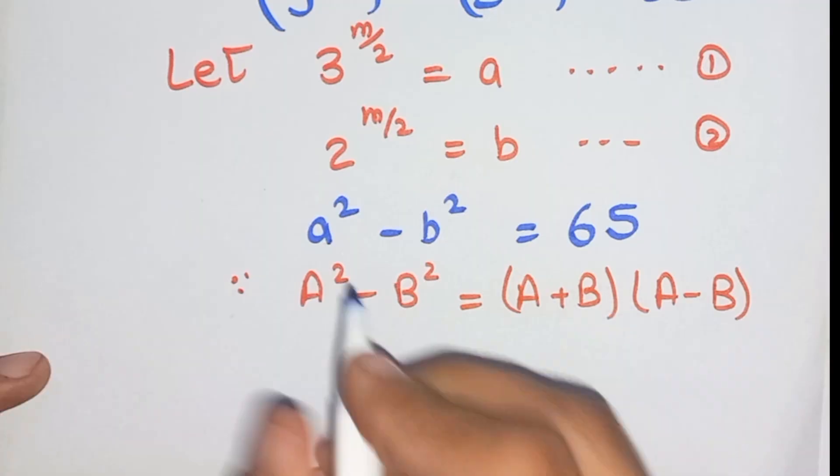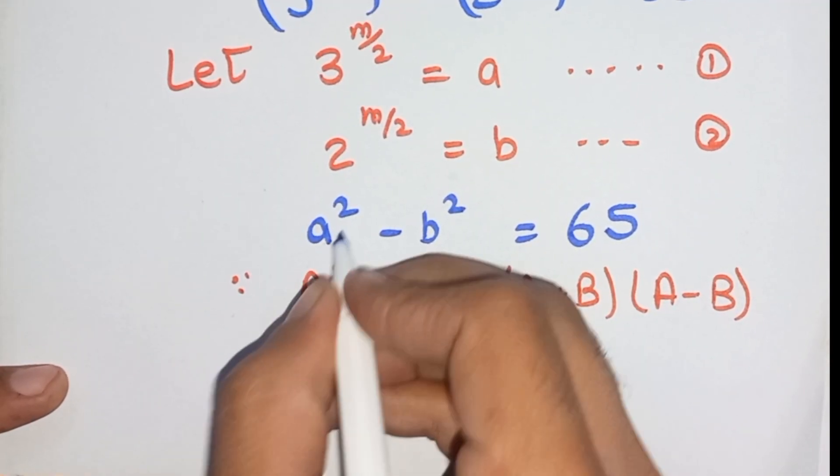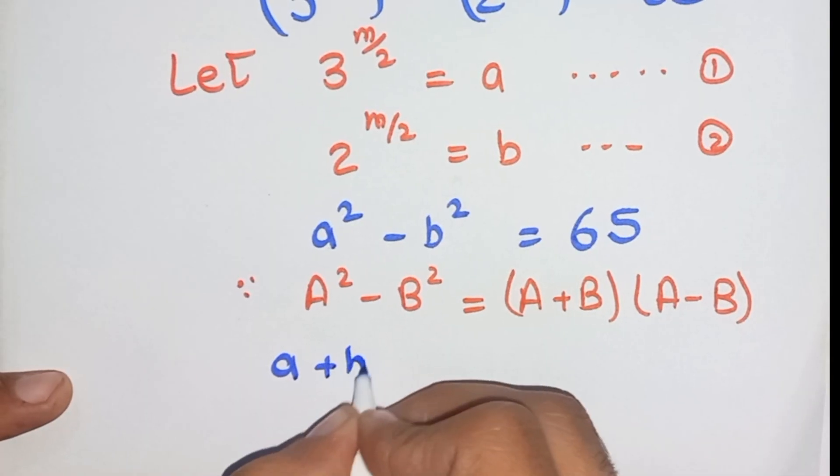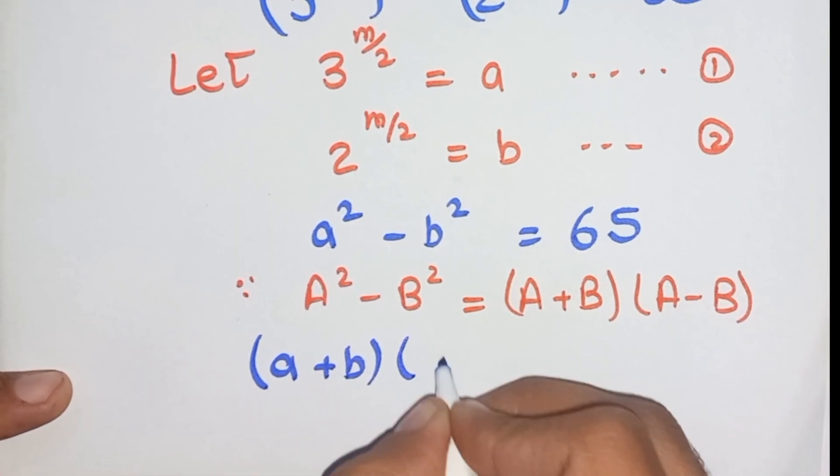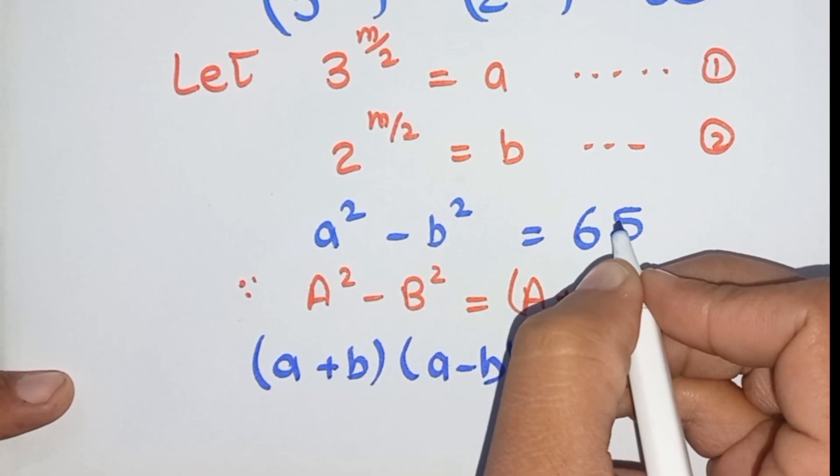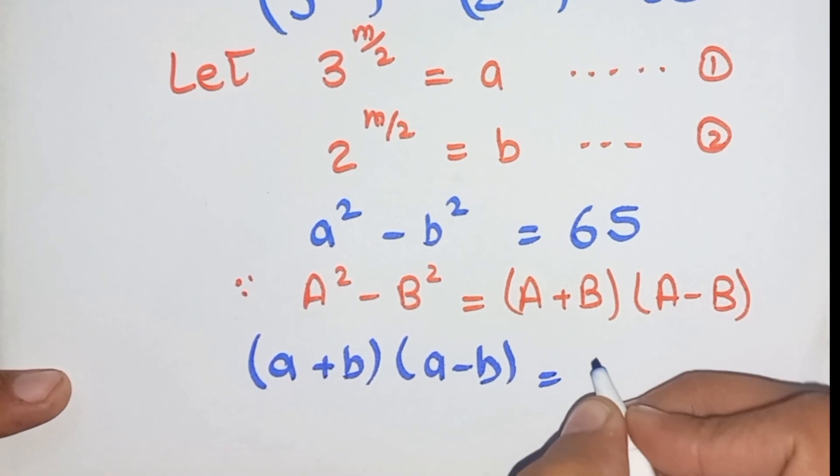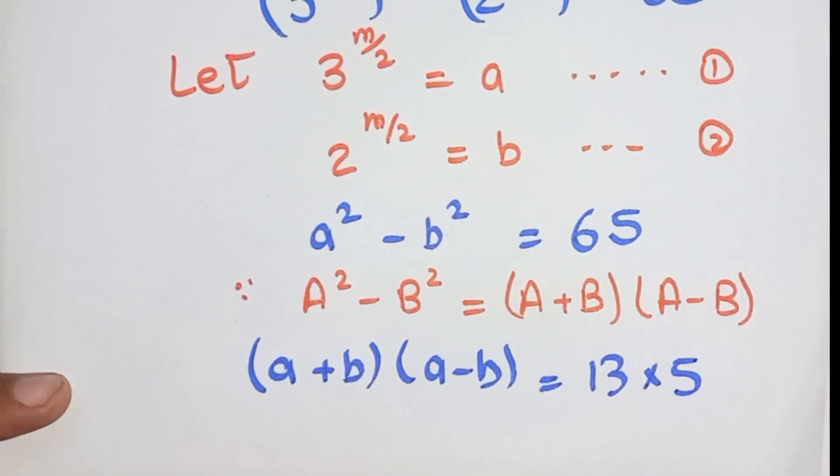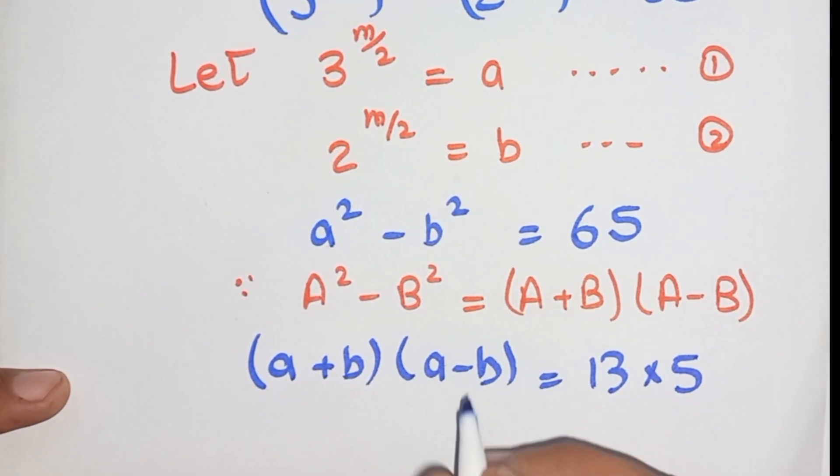Use it. We know the formula and we use (a+b)(a-b). So here 65, we separated 65 into 13 times 5.